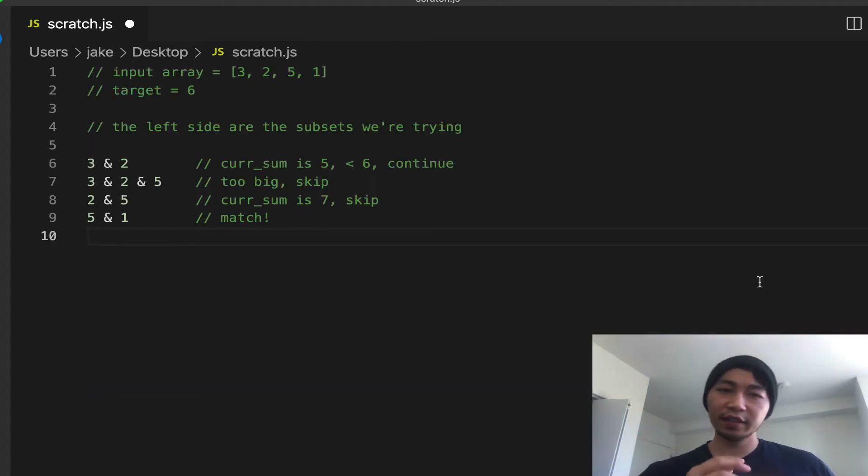Now, let's find a more efficient solution for this problem. Suppose we had an input array of 3, 2, 5, and 1, and a target sum of 6. And we want to find a contiguous subarray sum that equals 6. So if we start here, as we did in the brute force solution, and let's try out some subsets. So let's start with 3, which isn't going to equal 6, so we continue. And then 3 and 2 equals 5. 5 is less than 6, so we continue.